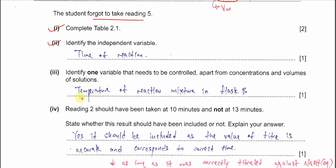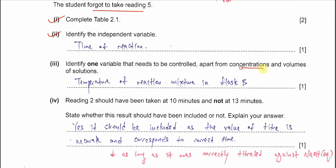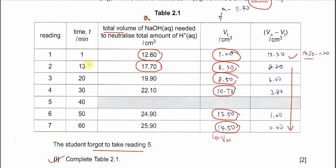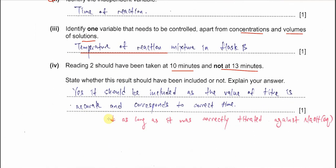Part 3: identify one variable that needs to be controlled apart from concentration and volume of solution. Because this is about hydrolysis and the reaction is sensitive to temperature, we must make sure the temperature of the reaction mixture in flask B is controlled — for example, fixed at 25°C. Part 4: reading 2 should have been taken at 10 minutes and not at 13 minutes, because the experiment uses 10-minute intervals.